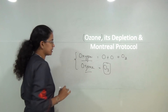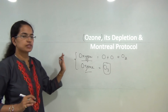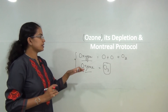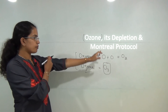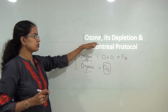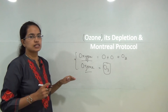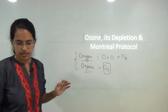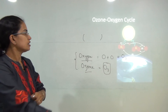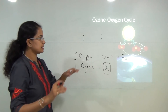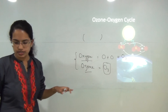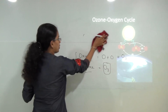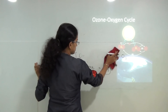When we talk about the formation of ozone, we must understand the oxygen-ozone cycle first. What happens in the real world is you have oxygen present in the atmosphere, and this oxygen breaks down into free radicals.